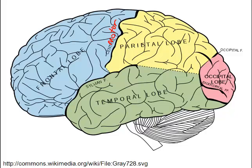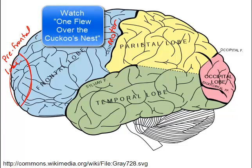The frontal lobe is the seat of our creativity and also the seat of our personality. The very front region is known as the prefrontal lobe, and damage to it can actually change personality. In the past, very aggressive patients in institutions might have had a prefrontal lobotomy, where this portion of the brain was actually removed. It resulted in very severe changes in personality and was dehumanizing.